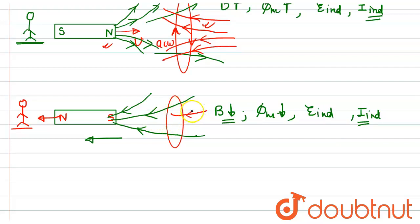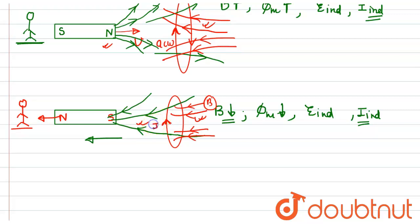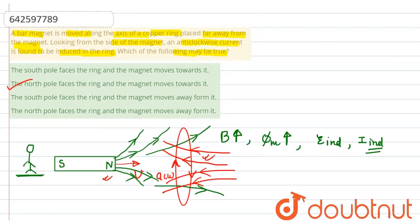Since the magnetic field lines are decreasing in this direction, the induced current will be produced in such a way that it will support these magnetic field lines. This is the magnetic field induced by the coil. This can only happen if the current direction in the coil is anticlockwise. So we can say that the south pole is moving away from the coil. The south pole faces the ring and the magnet moves away from it — that is also correct. So option B and option C will be the correct answer for this problem.